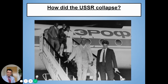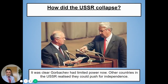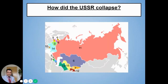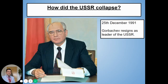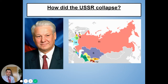Gorbachev was freed from his holiday home, but his power had been undermined. Yeltsin was seen as the true hero, and people started to see Gorbachev as weak. Other countries in the USSR realised they could now push for independence, and they did just that. The remaining states all told Gorbachev they wanted to be free and independent of Russia. It was clear to Gorbachev that he had no real power anymore as leader. And so on December 25th, 1991, Gorbachev resigned as leader of the USSR — and he was replaced by Boris Yeltsin.